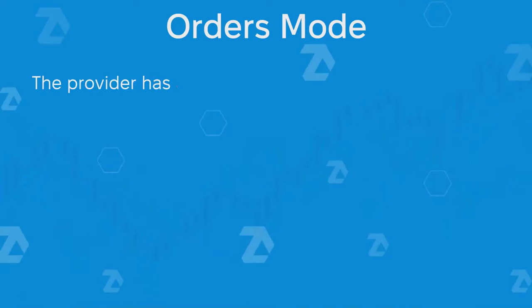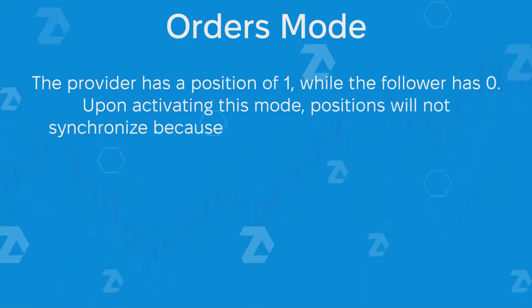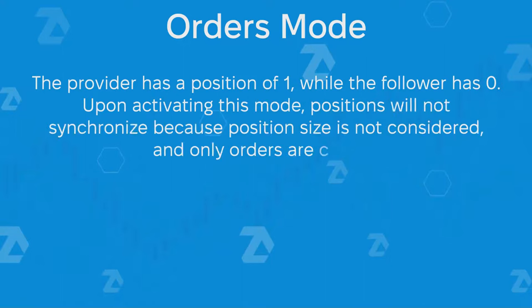Orders mode: the provider has a position of 1, while the follower has 0. Upon activating this mode, positions will not synchronize because position size is not considered and only orders are copied.